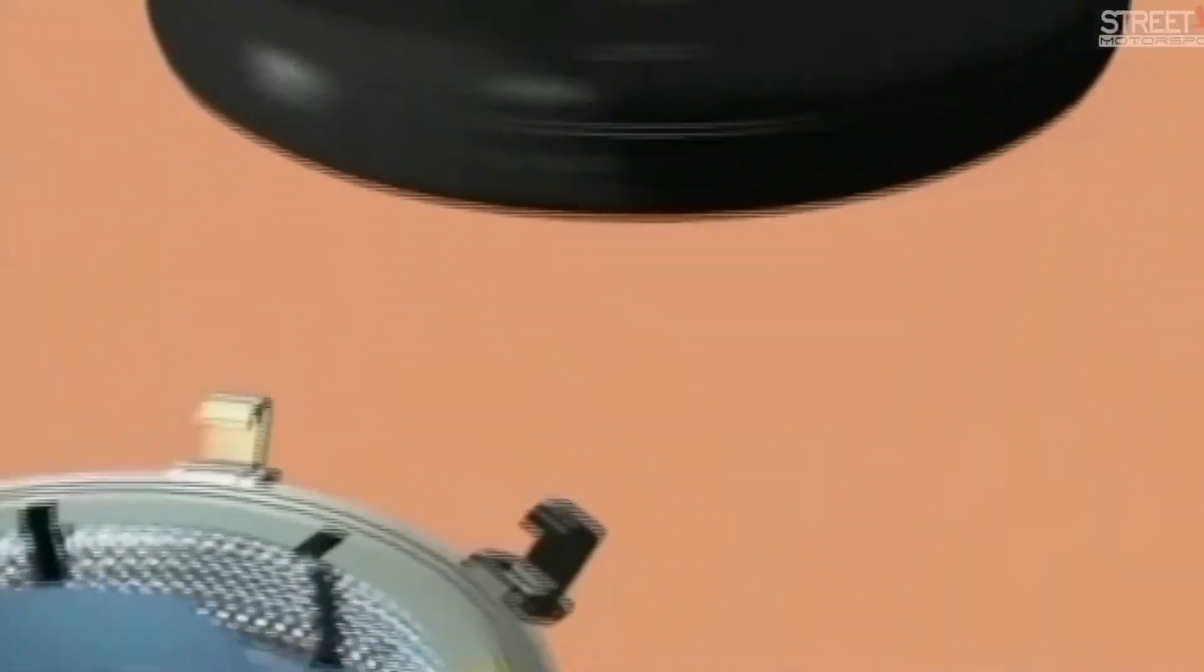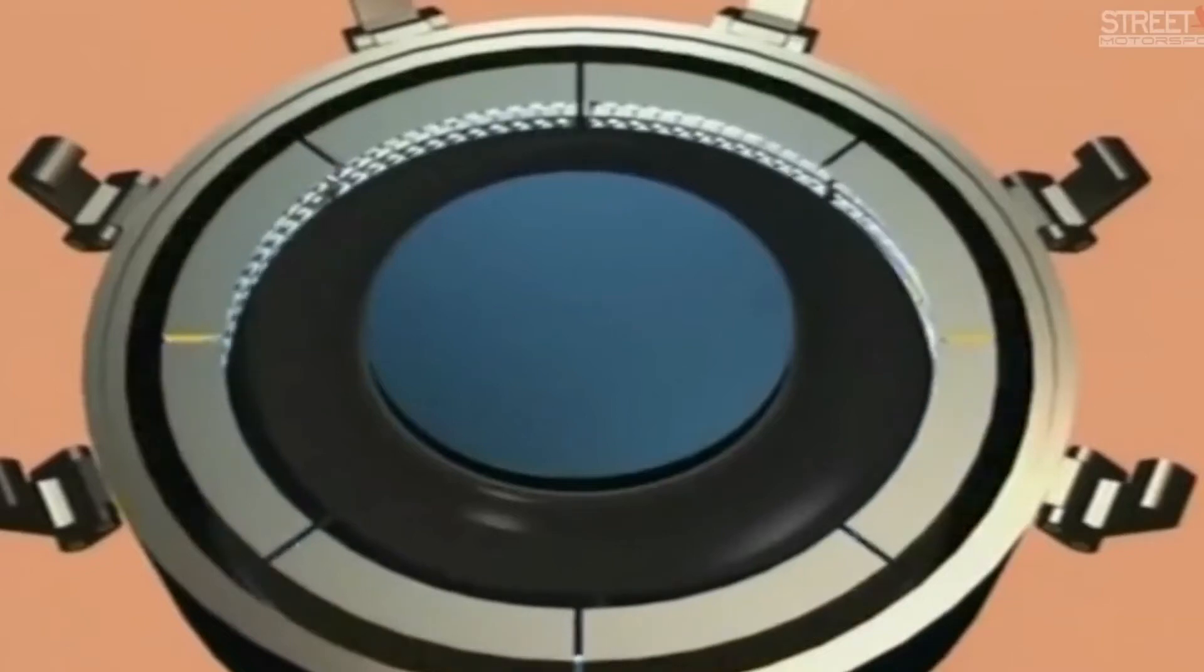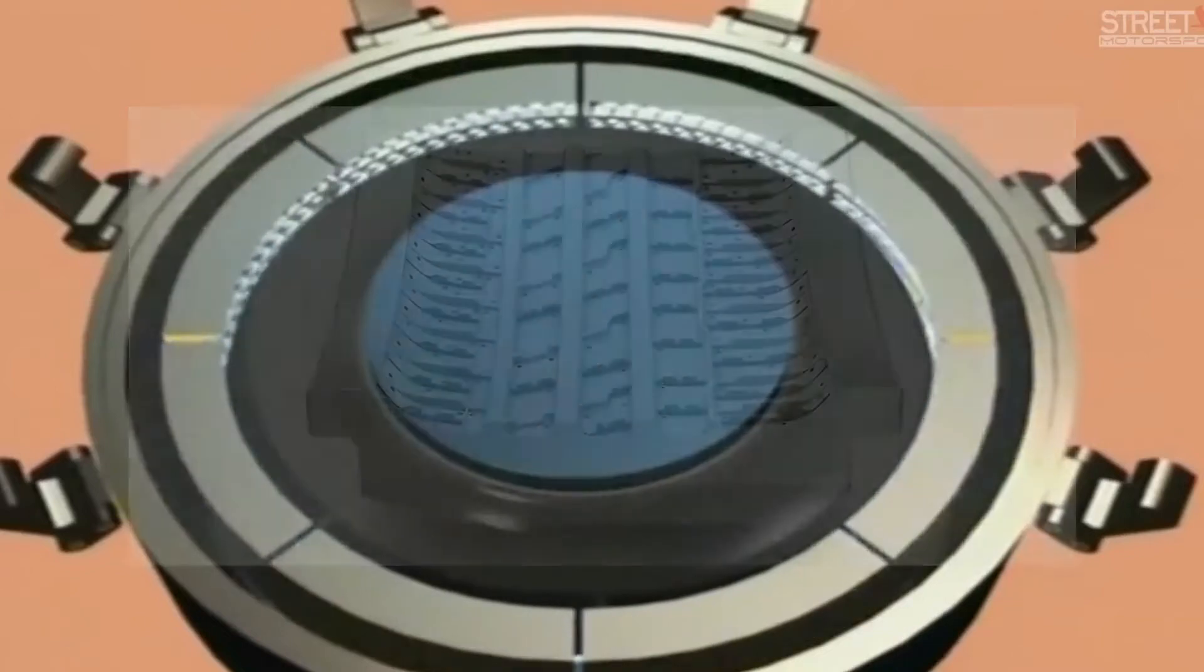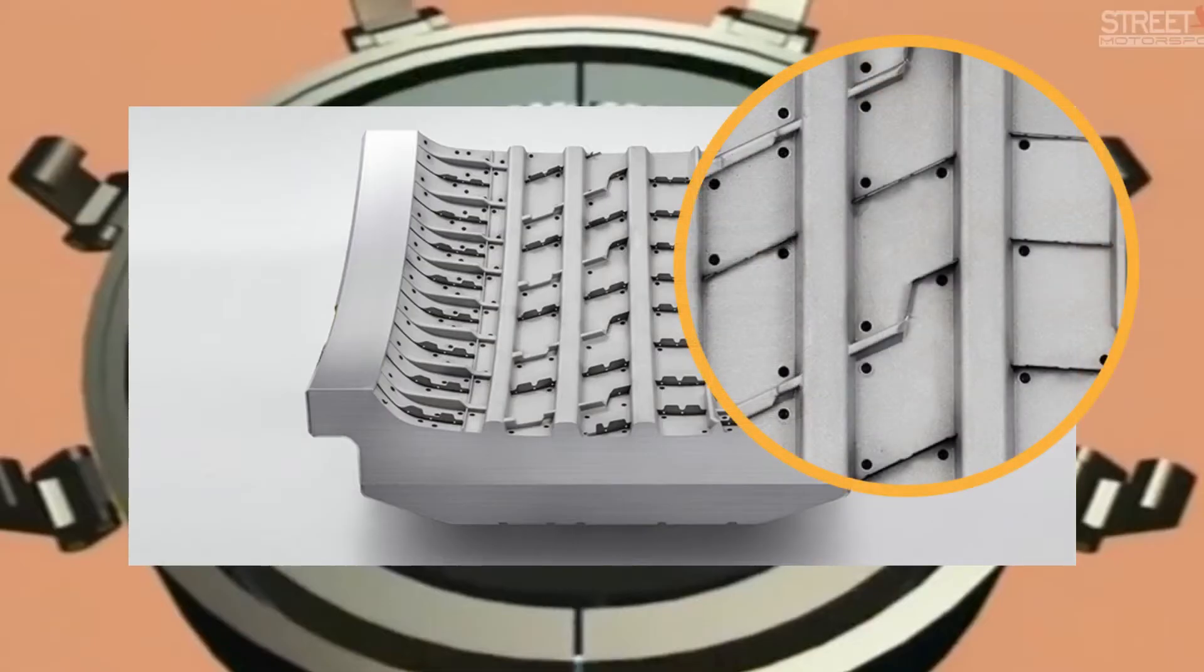When tire manufacturers produce tires, they inject rubber into molds. The mold's design has small holes all around in order to ensure adequate ventilation and eliminate the possibility of air bubbles getting trapped where they don't belong.